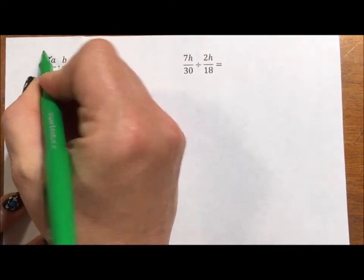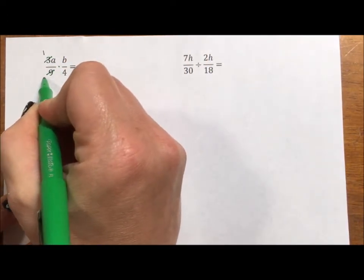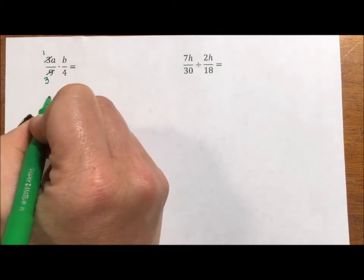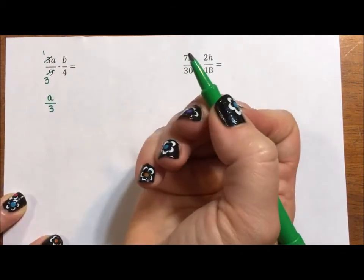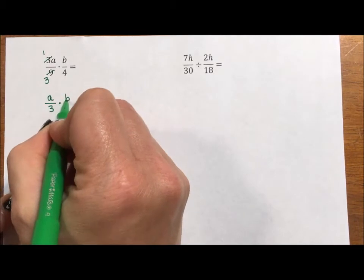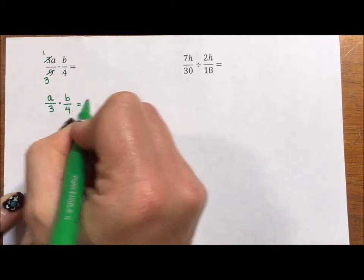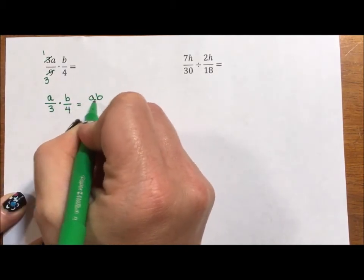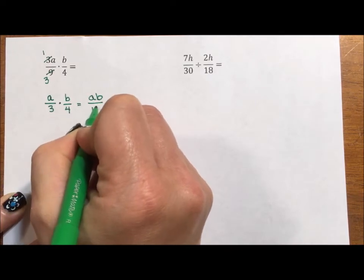3 goes into 3 once, 3 goes into 9 three times, so I'm left with 1a over 3, and you have the option of writing the 1 or not, times b over 4. a times b is ab, 3 times 4 is 12,